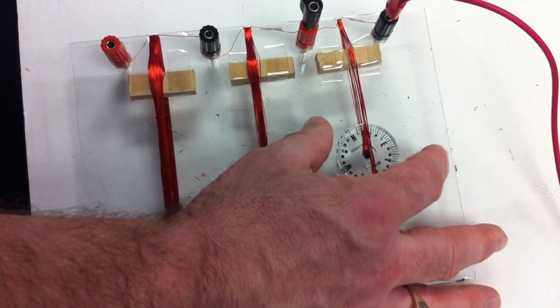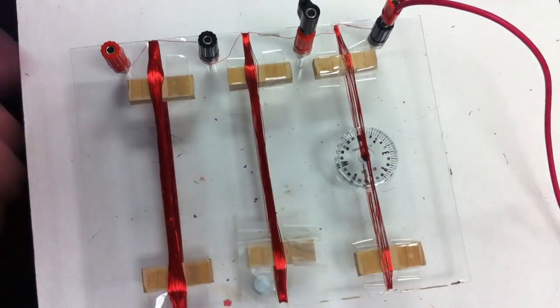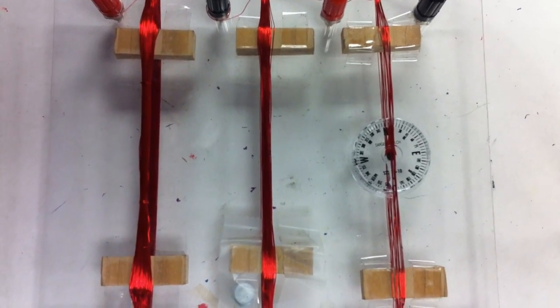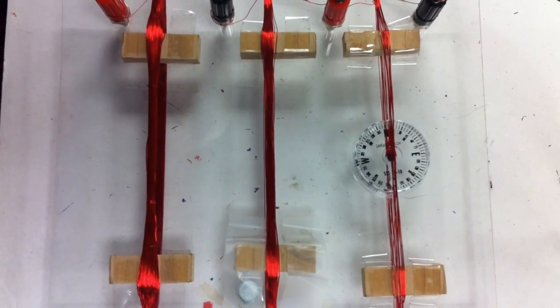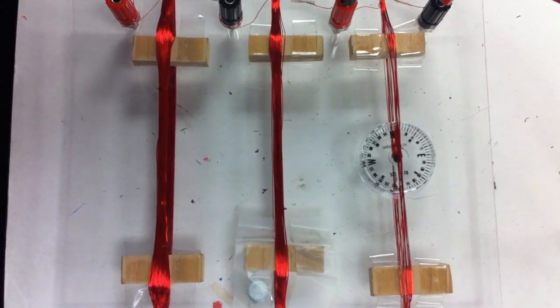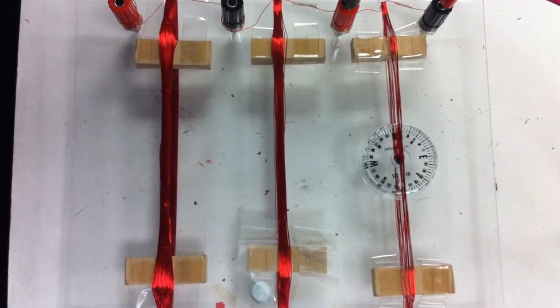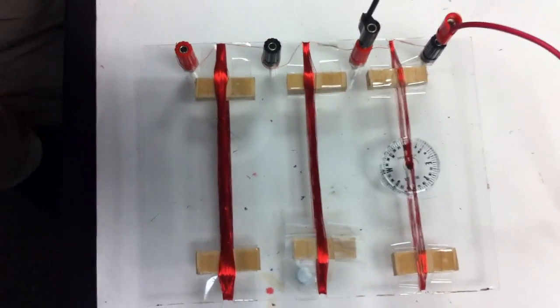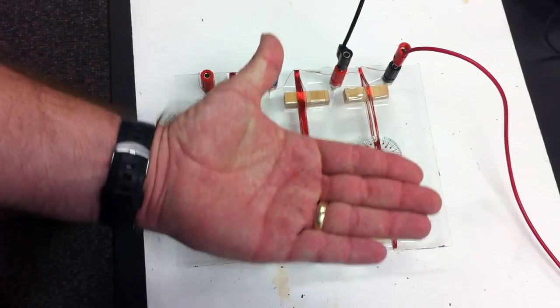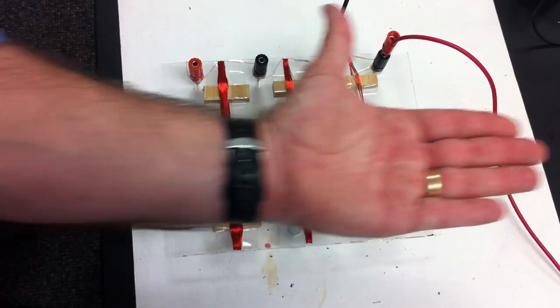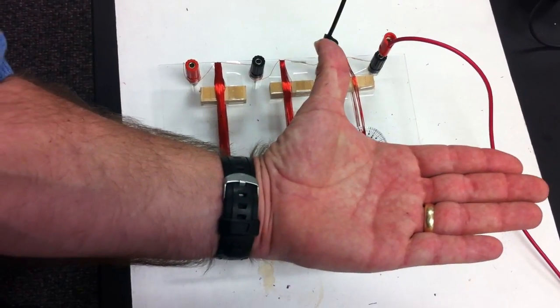And when I close the switch, what will happen is the compass is going to deflect because of the magnetic field made by the loop of wire. And if we use our left-hand rule for negative current and the compass is underneath the wire, what you'll see is that it'll deflect to the right or to the east on the compass dial.